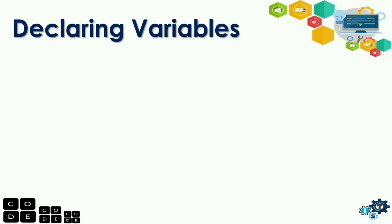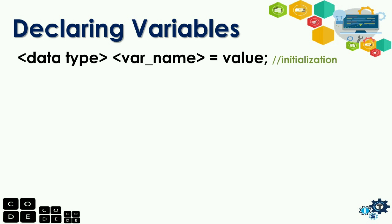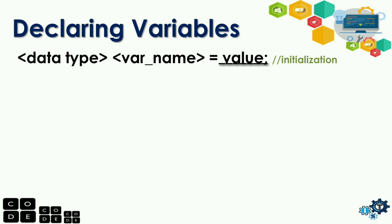Next, how to declare a variable. We have two ways of declaring a variable. First, we have: data type, variable name, equals, value, and semicolon. The data type will also be discussed in this video, so watch until the end. The variable name can be any name you think of, as long as it is unique. And of course, the value — this is the value you want to place in the variable name. But the value depends on what the variable's data type accepts. This syntax is called initialization — because it has an initial value. You are already placing a value in the variable.